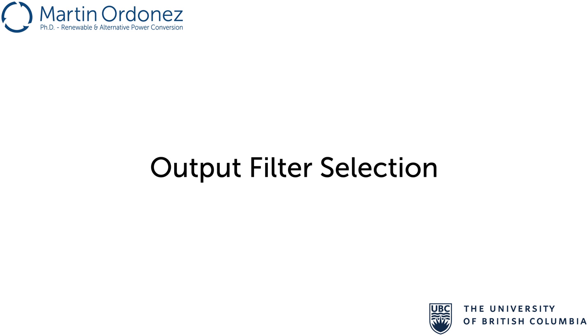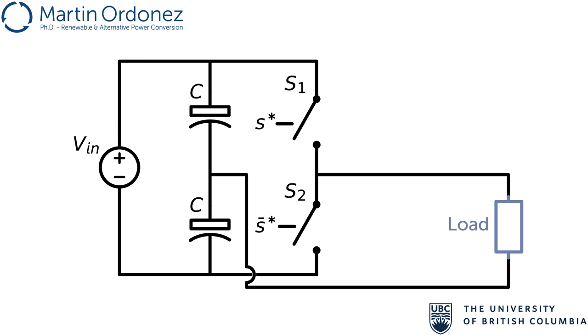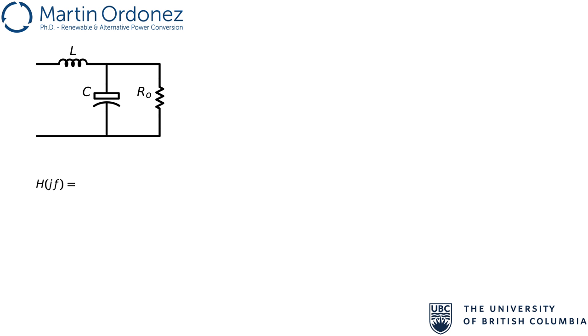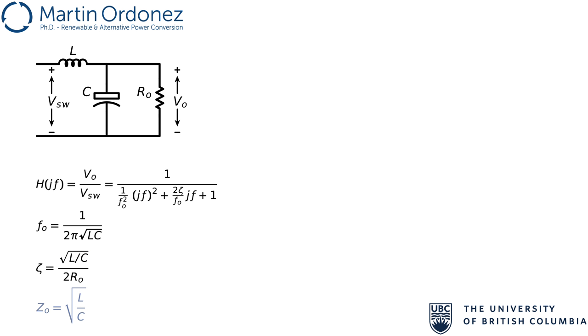The type and values of the output filter for an inverter depend on the application and the type of load. Some loads may not need a filter at all, some might do with an L filter, and some need an LC filter. Some others need an LCL filter. As an example, we will consider an LC filter interfacing a resistive load. The frequency response of the LC filter with resistive load from V switch to V out is given by this equation. This is a typical second-order transfer function, with a natural frequency of 1 over 2 pi square root of LC and a damping factor of square root of L over C, divided by 2R0.